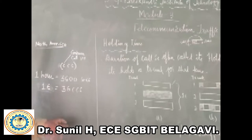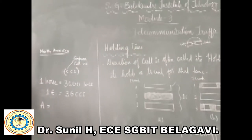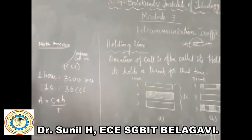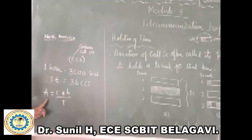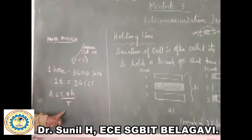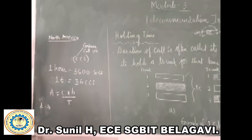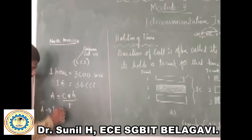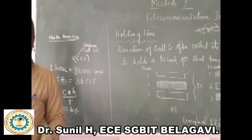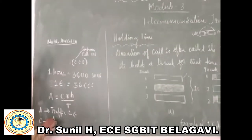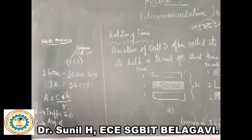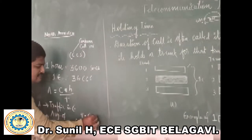From the definition of Erlang, we have the equation: A = C × H / T, where A is traffic in Erlangs, C is the average number of call arrivals during time interval T, and H is the holding time. The value of T is taken as 60 seconds for all numerical problems.